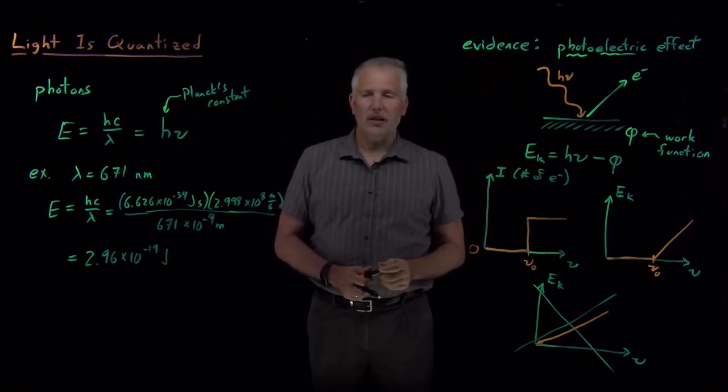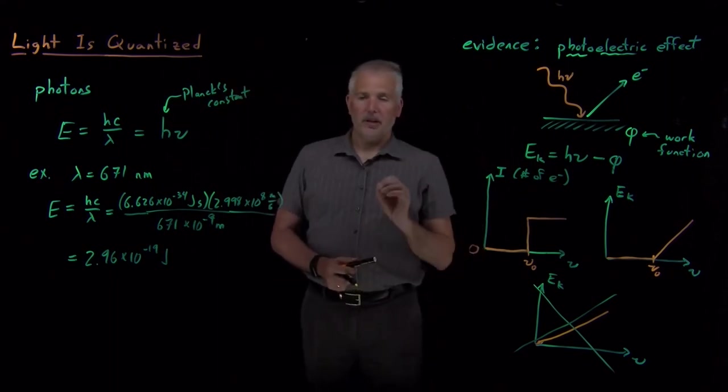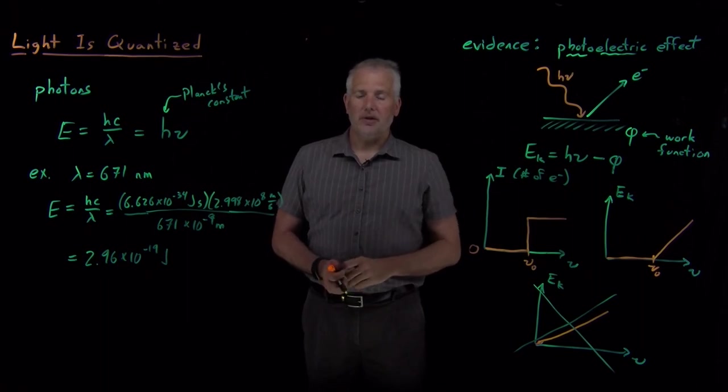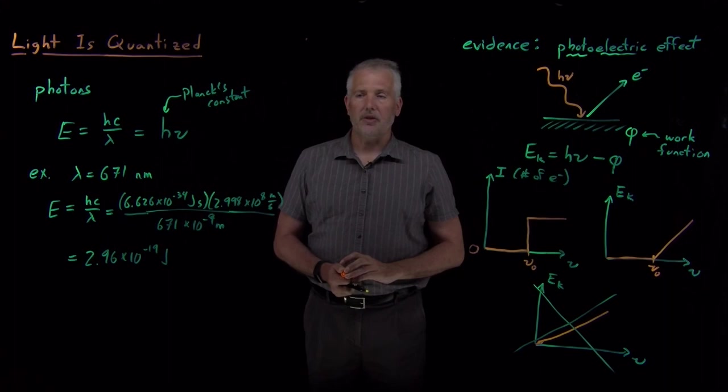It turns out light is not the only thing that's quantized. It's composed of discrete individual amounts of energy, and so that's what we'll talk about next is other things that are quantized besides light.